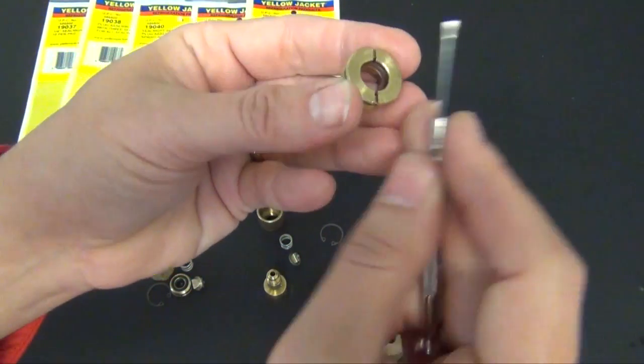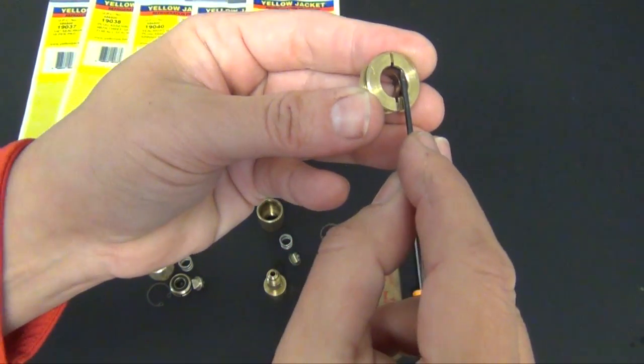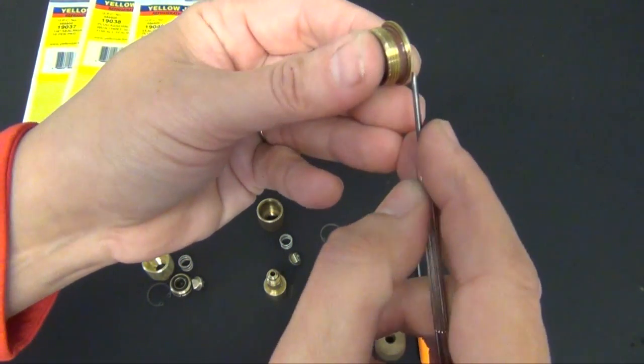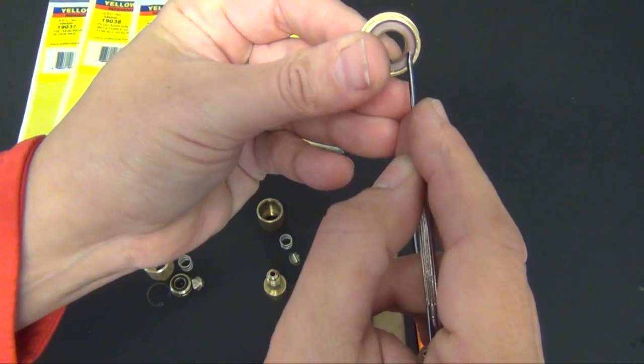Then you would just go back in and put your O-ring and your two gaskets.